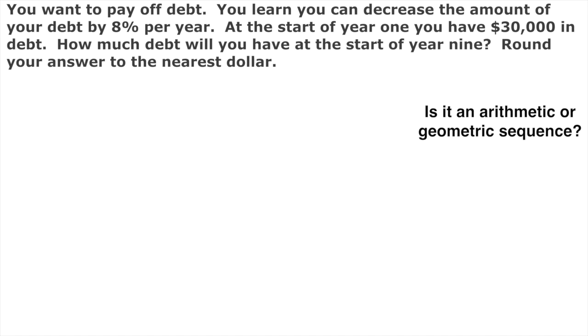So the very first thing we need to do is determine whether this one's an arithmetic or a geometric sequence. The way that we determine that is an arithmetic sequence we are adding or subtracting the very same amount every time. So in other words, if you're paying down $500 on this debt every single year, that would be an arithmetic sequence.